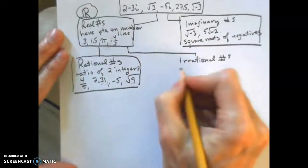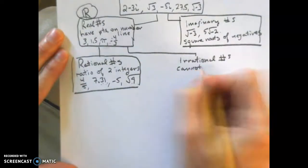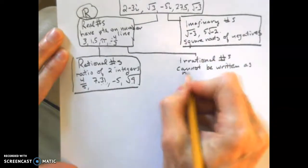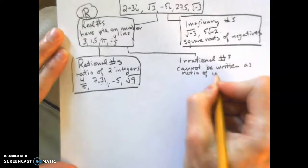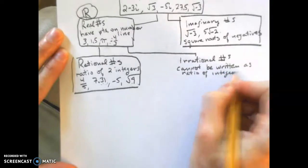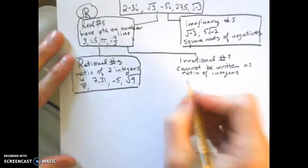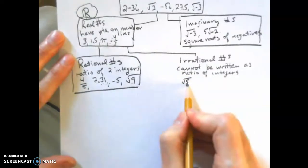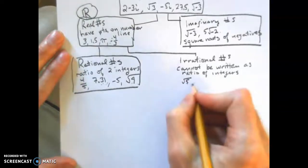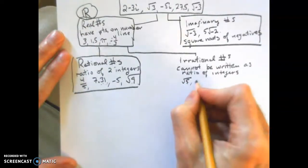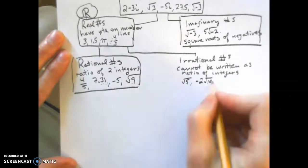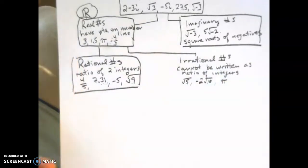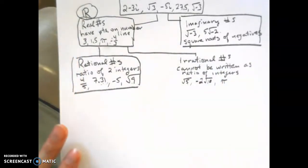Irrational numbers cannot be written as a ratio of integers. Something like the square root of 5 — if you plug that into your calculator, you get a decimal that never ends and never repeats. Negative 2 times the square root of 10 is another example. Irrational numbers can be positive or negative. Pi is also irrational — 3.14159 dot dot dot, it never ends and never repeats.